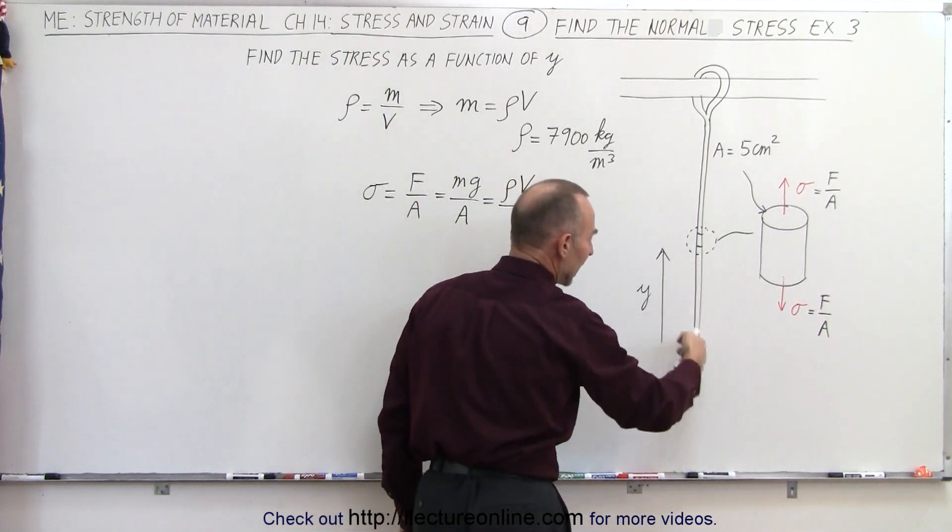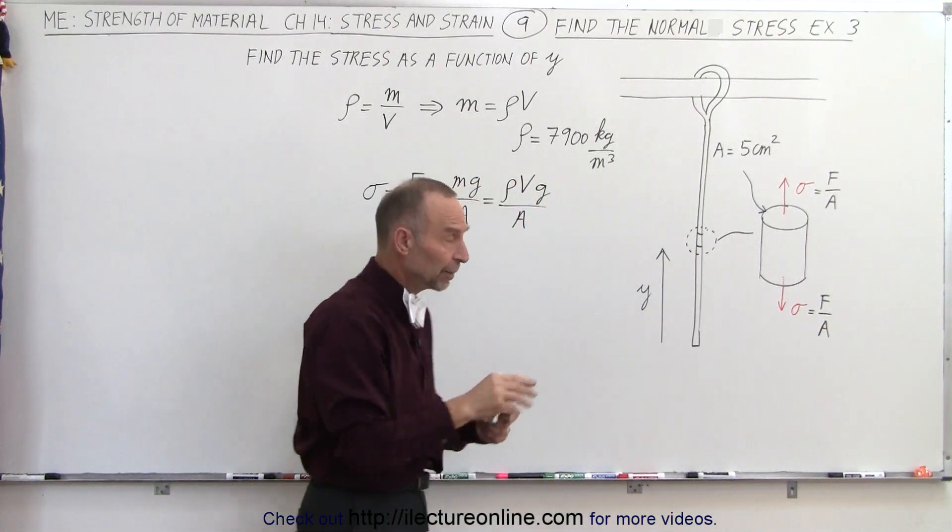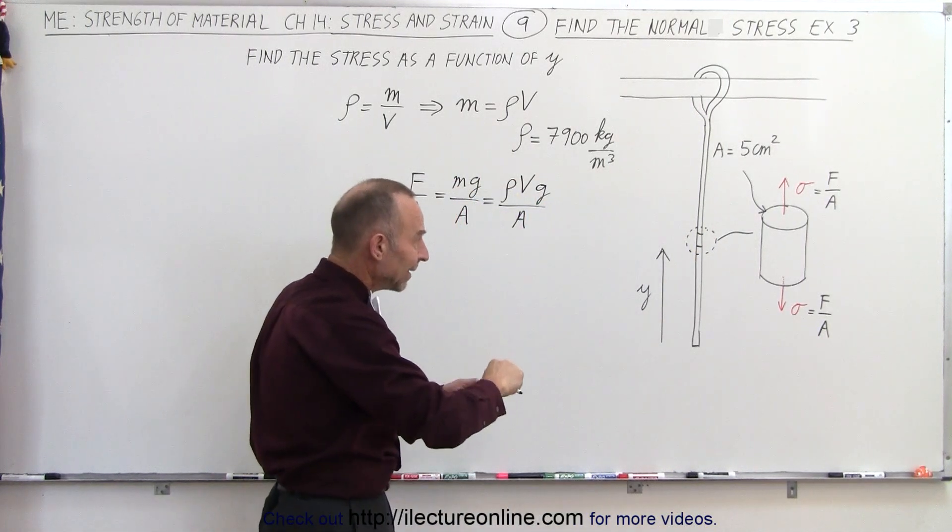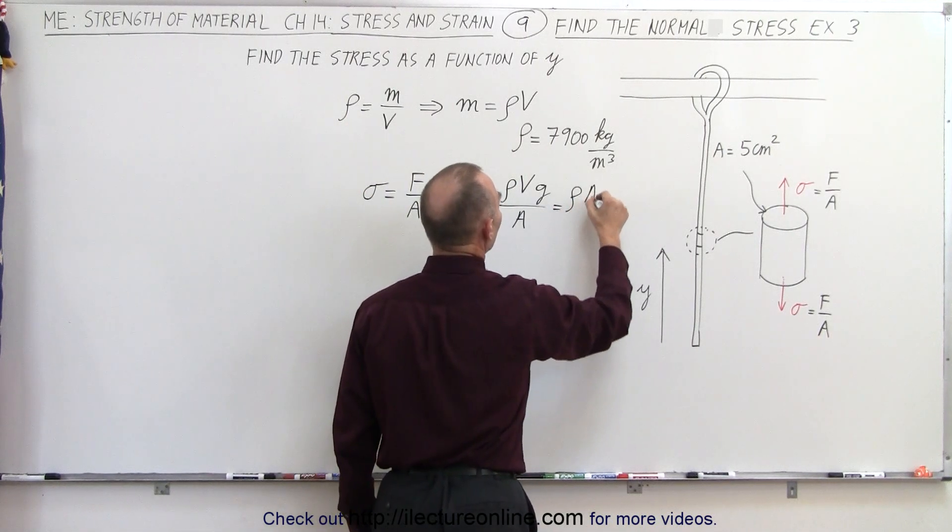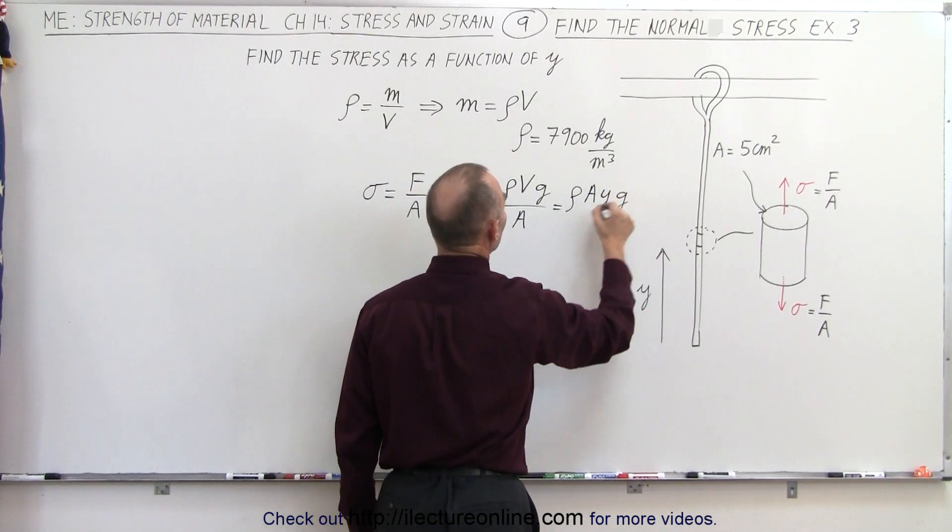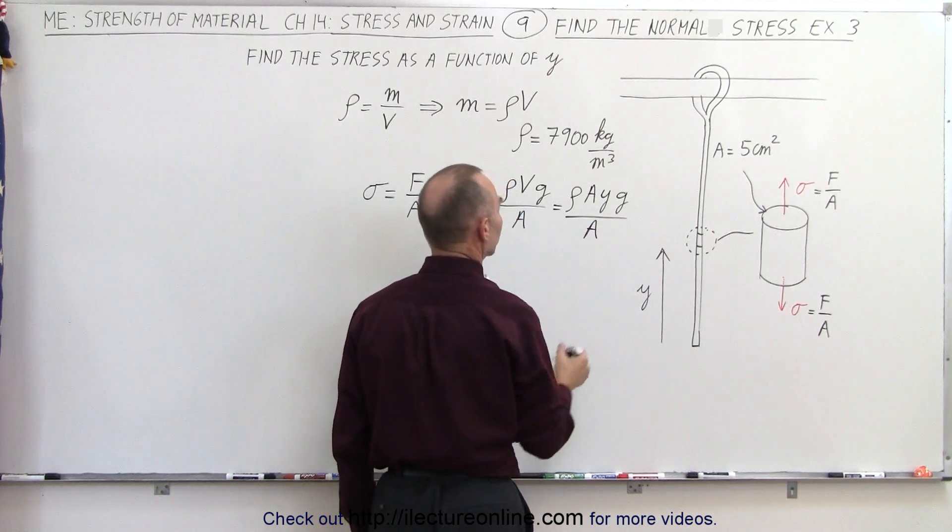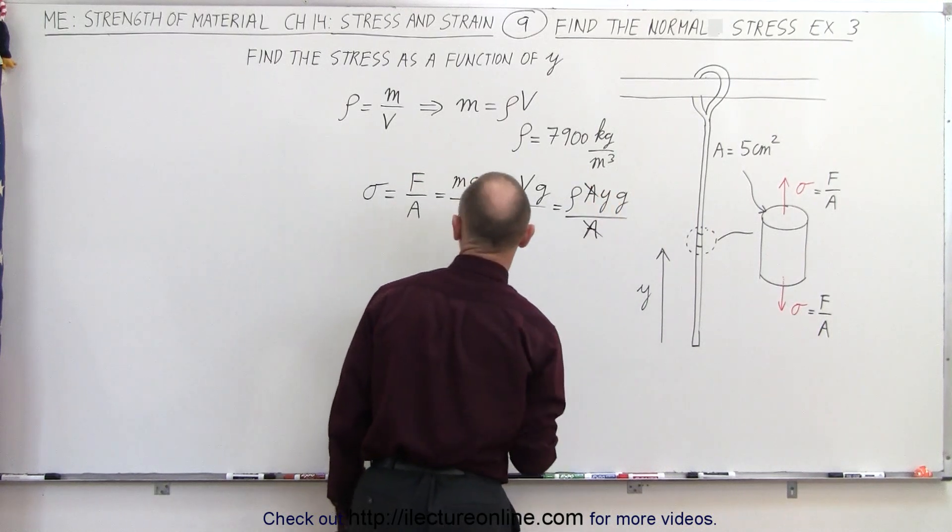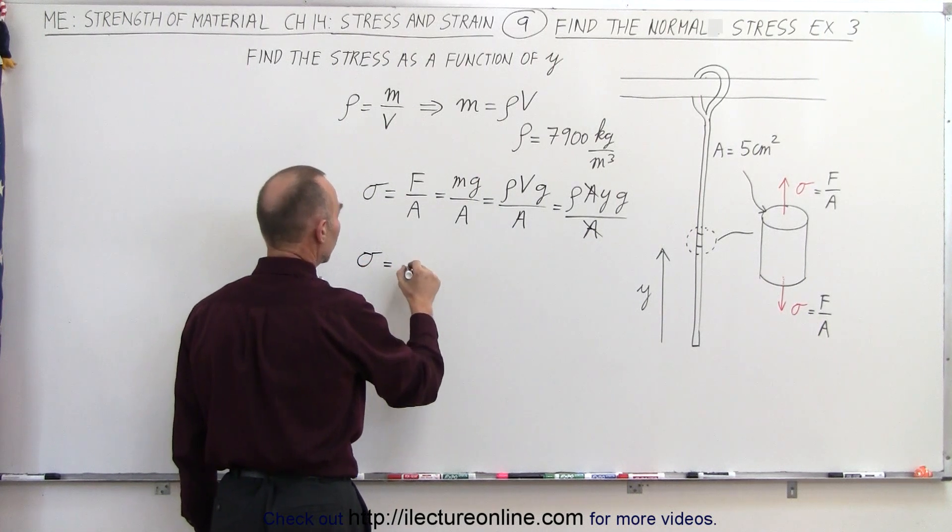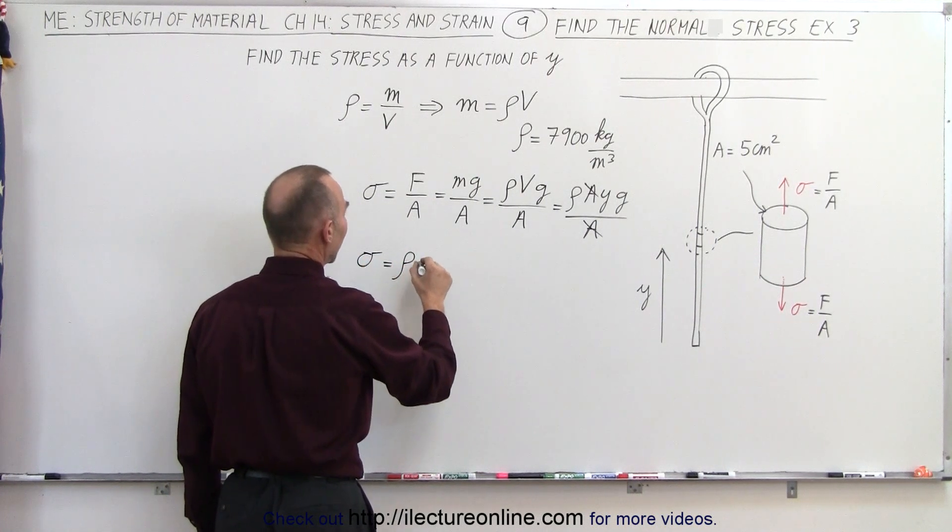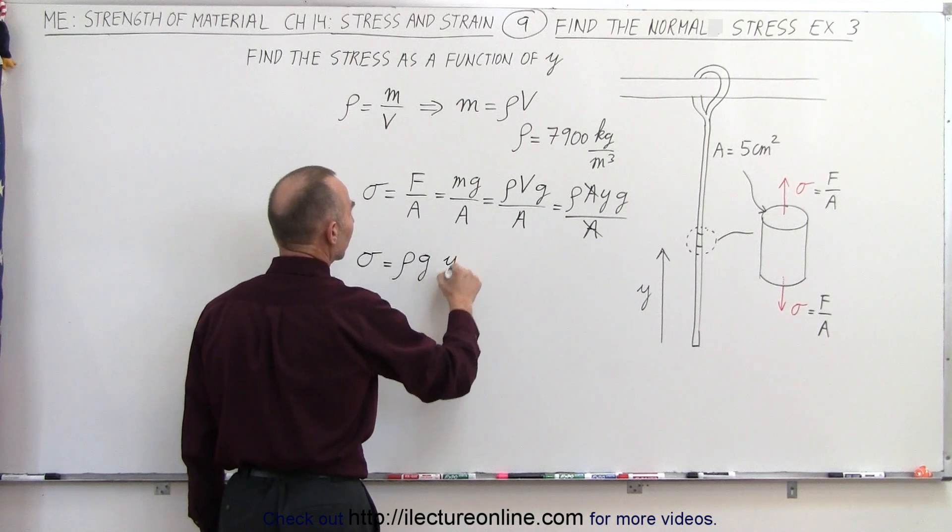Now the volume of the cable, think of it as a cylinder, would be the cross-sectional area A times the height y. So this equals density times A times y times g, all divided by the cross-sectional area. Notice that the cross-sectional area cancels out, so the stress equals density times g times y.